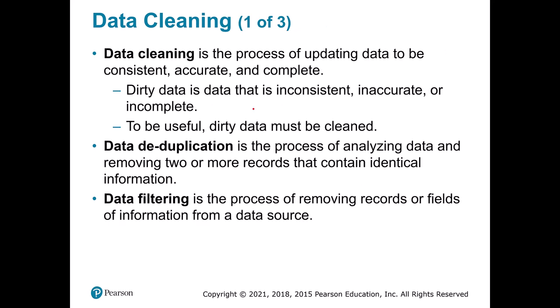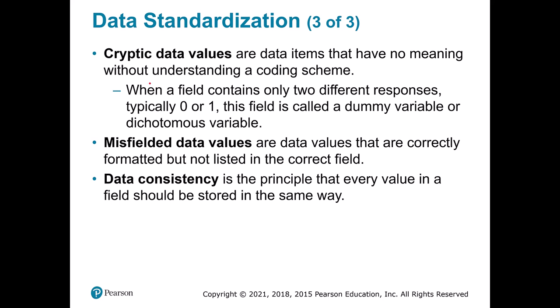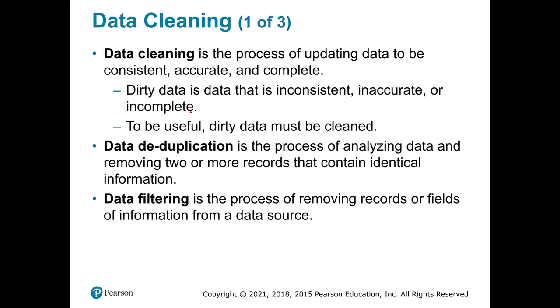With cleaning, anything inconsistent or incomplete has to be fixed. One thing you might see is a zero or one for a variable — called a dummy variable — where one means yes and zero means no. Going back to the point-of-sale example: is this person part of our discount club? If so, it's a one; if not, it's zero. You might also need to deduplicate — perhaps someone lost their card and got a new one, and you want to combine their records to show they're one consistent customer. We also need to filter out records — for example, you might not want to include anyone who is also an employee.